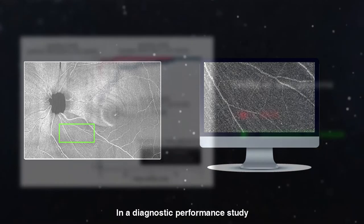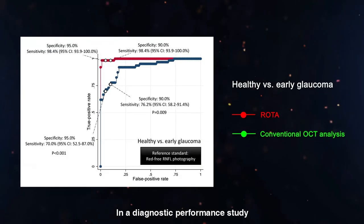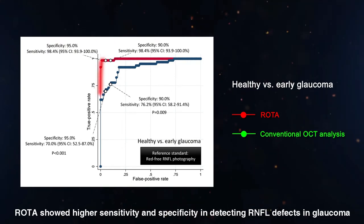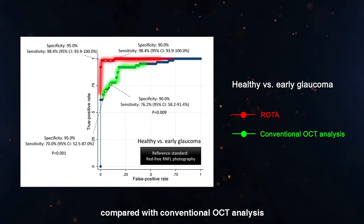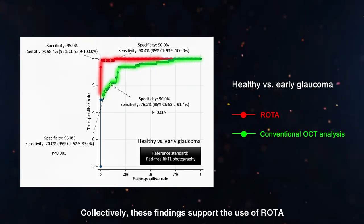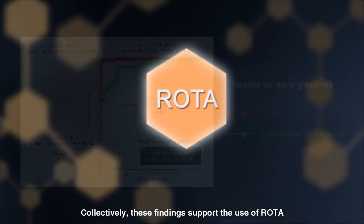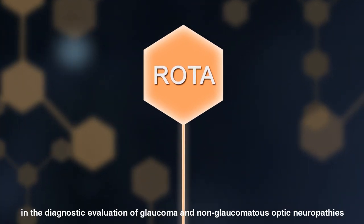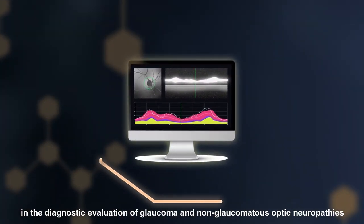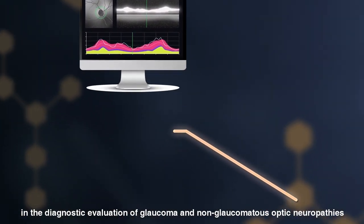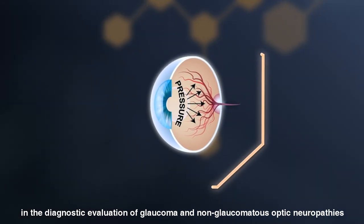In a diagnostic performance study, ROTA showed higher sensitivity and specificity in detecting RNFL defects in glaucoma compared with conventional OCT analyses. Collectively, these findings support the use of ROTA in the diagnostic evaluation of glaucoma and non-glaucomatous optic neuropathies.